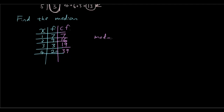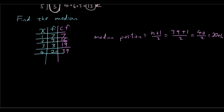So the median position is n plus 1 over 2, which is 39 plus 1 over 2, which is 40 over 2, which is 20th. So you're going to move down this cumulative frequency column and go to the first number that is bigger than or equal to 20. Going down we have 7, 16, 19, 39 — so 39 is bigger than or equal to 20. That means 4 is our median.